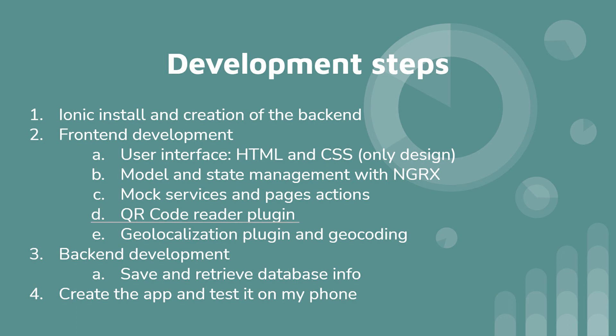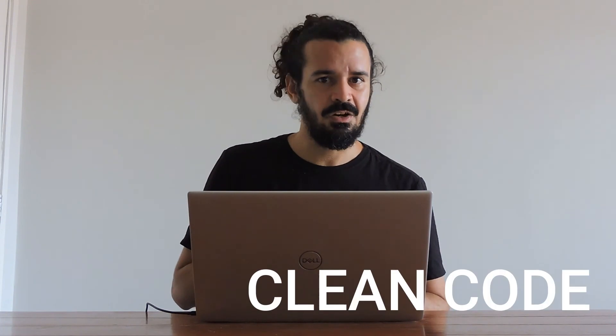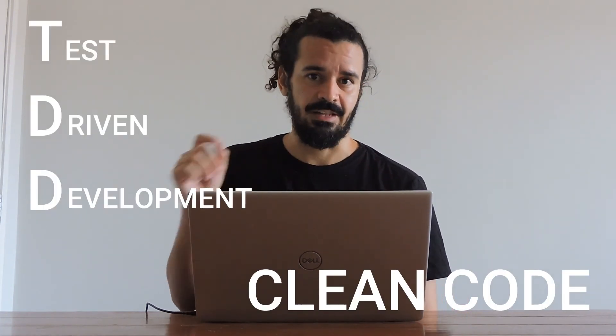Then I will add the necessary plugins to the app — the first being the QR code reader plugin, followed by the geolocation plugin, which gives me the latitude and longitude of the client. I'll then geocode that latitude and longitude, meaning I'll transform those coordinates into a real address with a street name, city, zip code, and so on. After all that I will build the back end, which will be straightforward as it will be a serverless Firestore backend. Finally I'll build the real app and install it on my Android phone so you can see it actually works. All this coding will be done using the best techniques of clean code and TDD — test-driven development — which are essential to any developer who wants to be called a real developer.